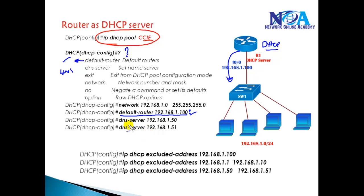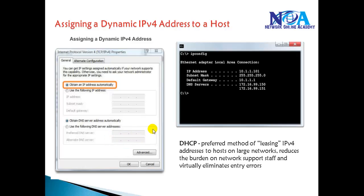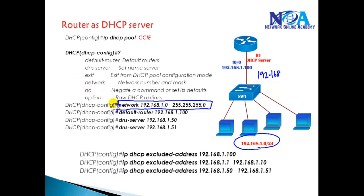If you have DNS servers, you can specify them so that clients automatically receive DNS information. If you want to access the internet or any servers on the internet, you must know the DNS server address, and the DHCP server will provide that information to the clients. We also need to define the network range we want to use — in this case 192.168.1.0 with a /24 subnet mask.